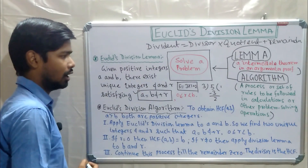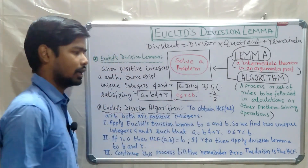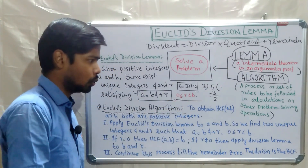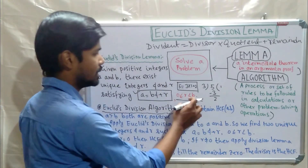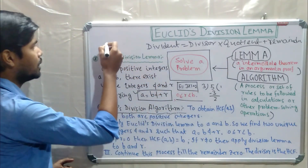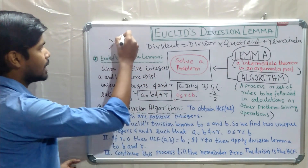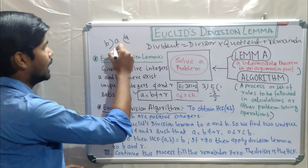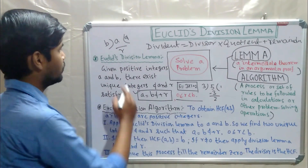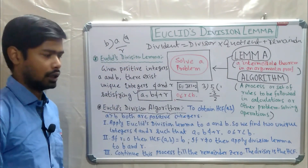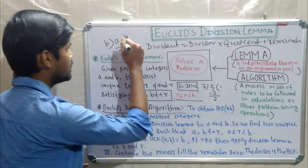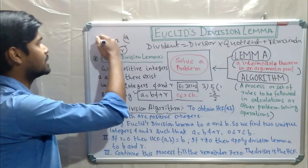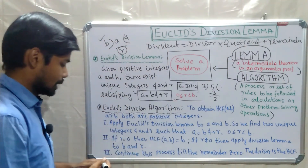In Euclid's division lemma, 0 ≤ r < b means the remainder must be greater than or equal to 0 and less than b. So if we divide a by b and get q as quotient and r as remainder, we write a = bq + r, where r must be ≥ 0 and less than the divisor b.